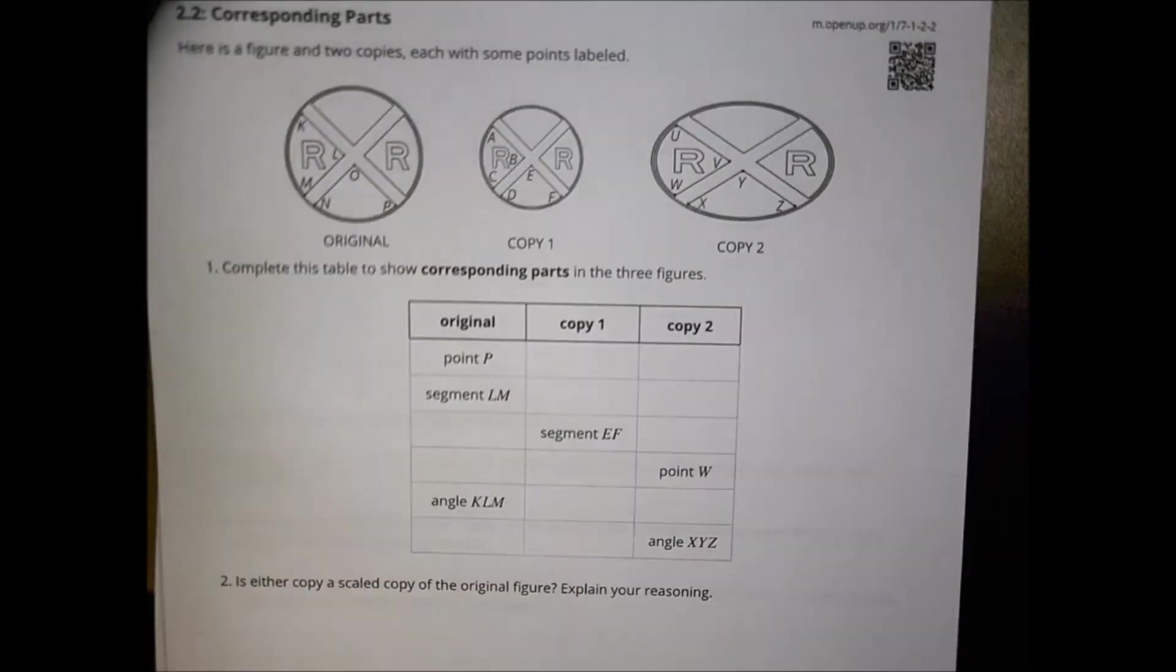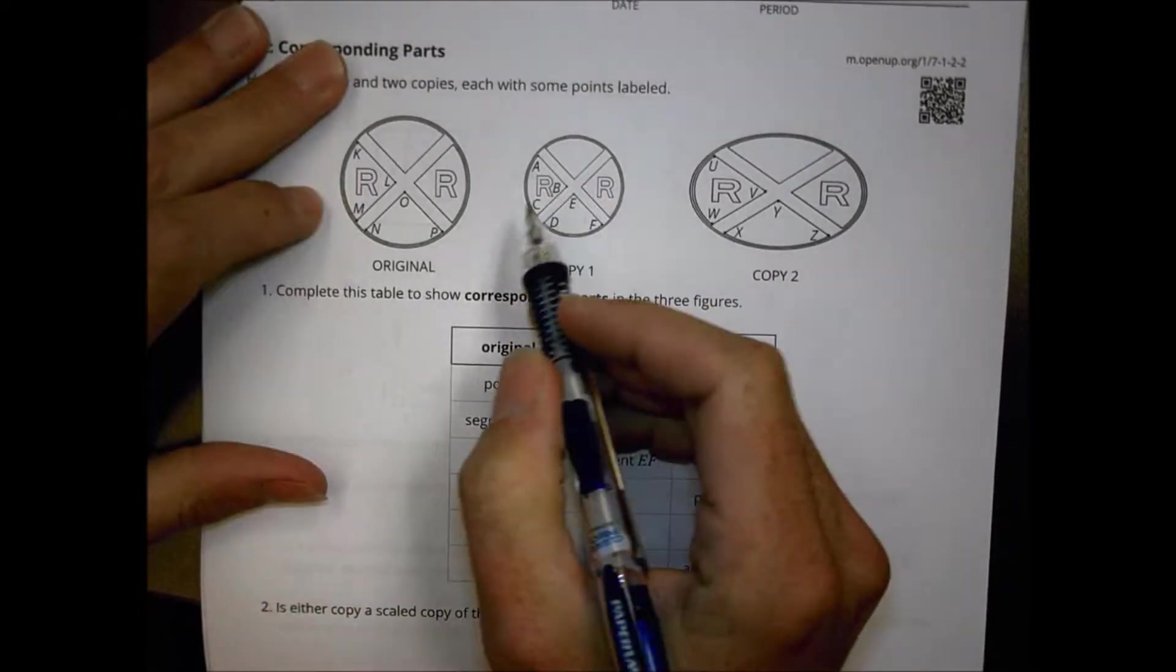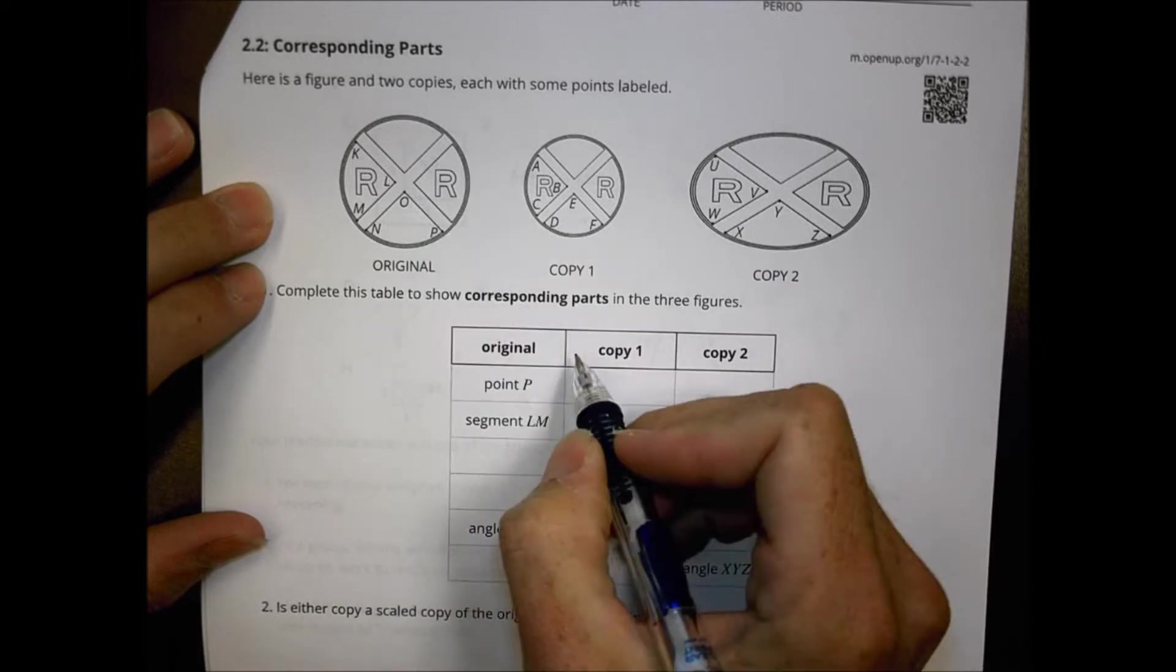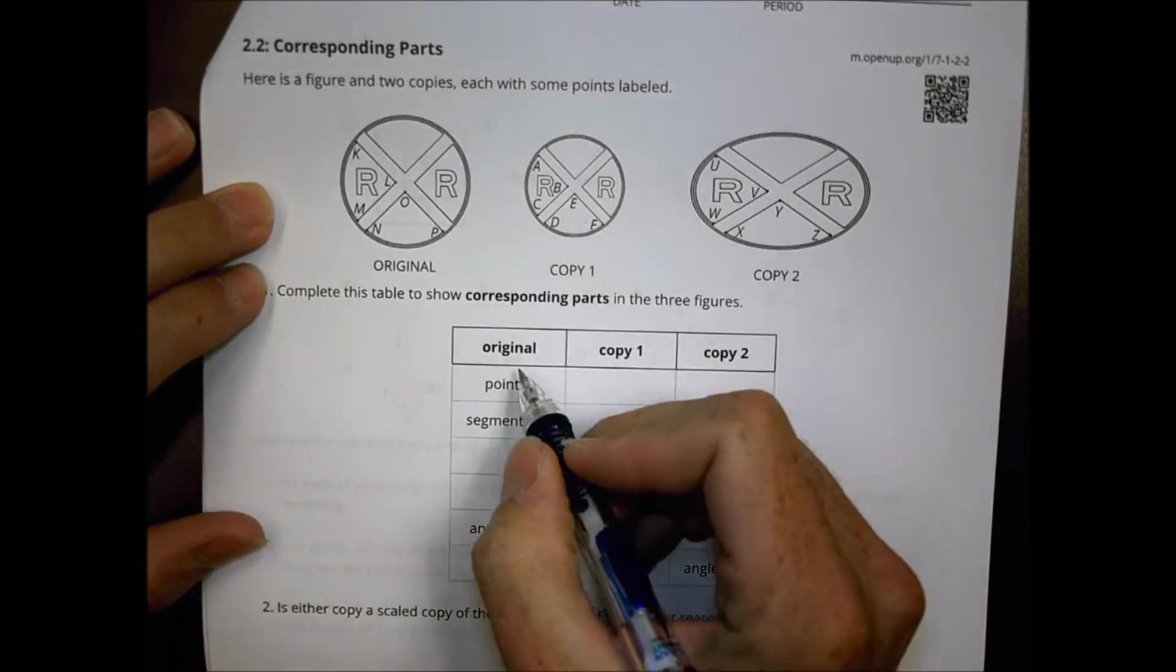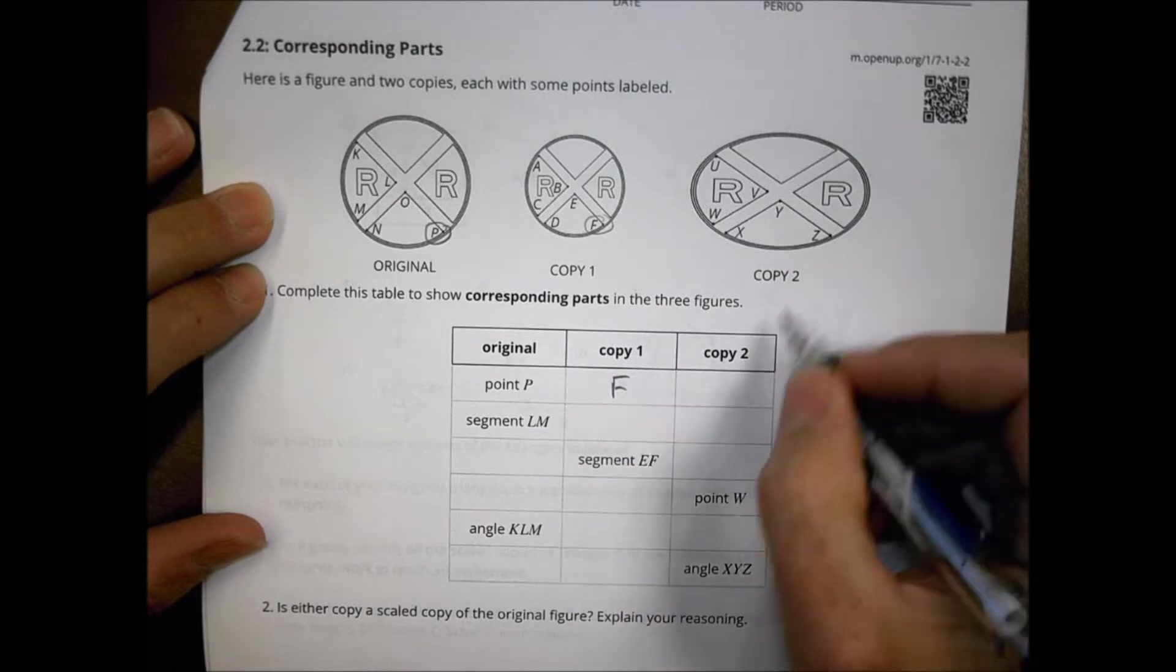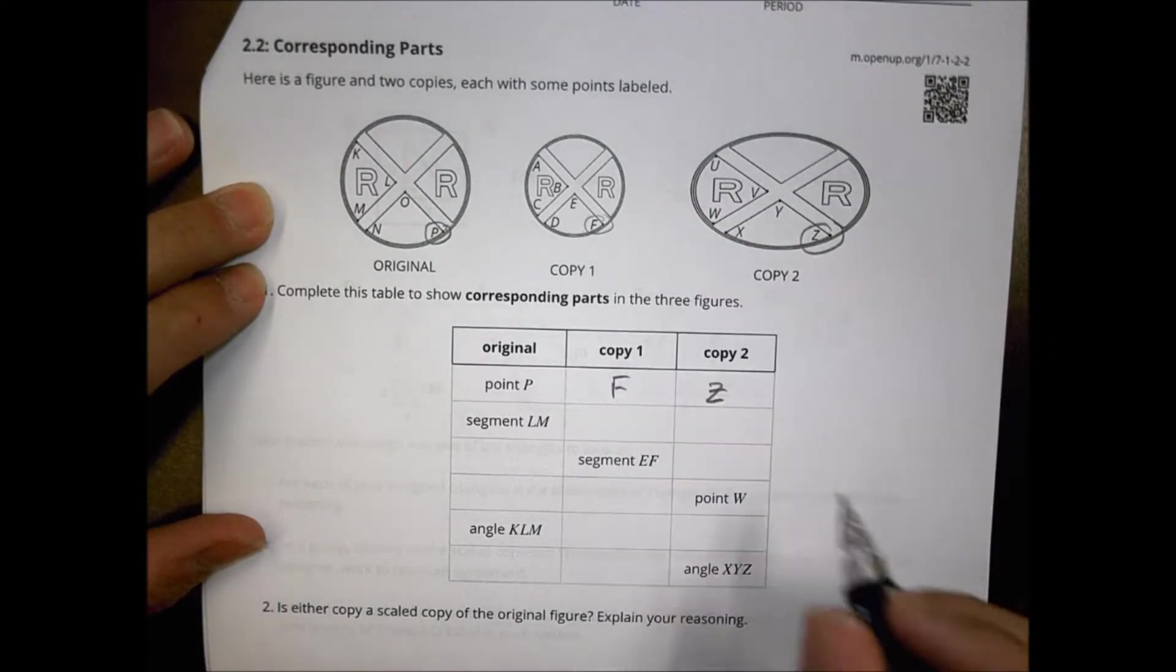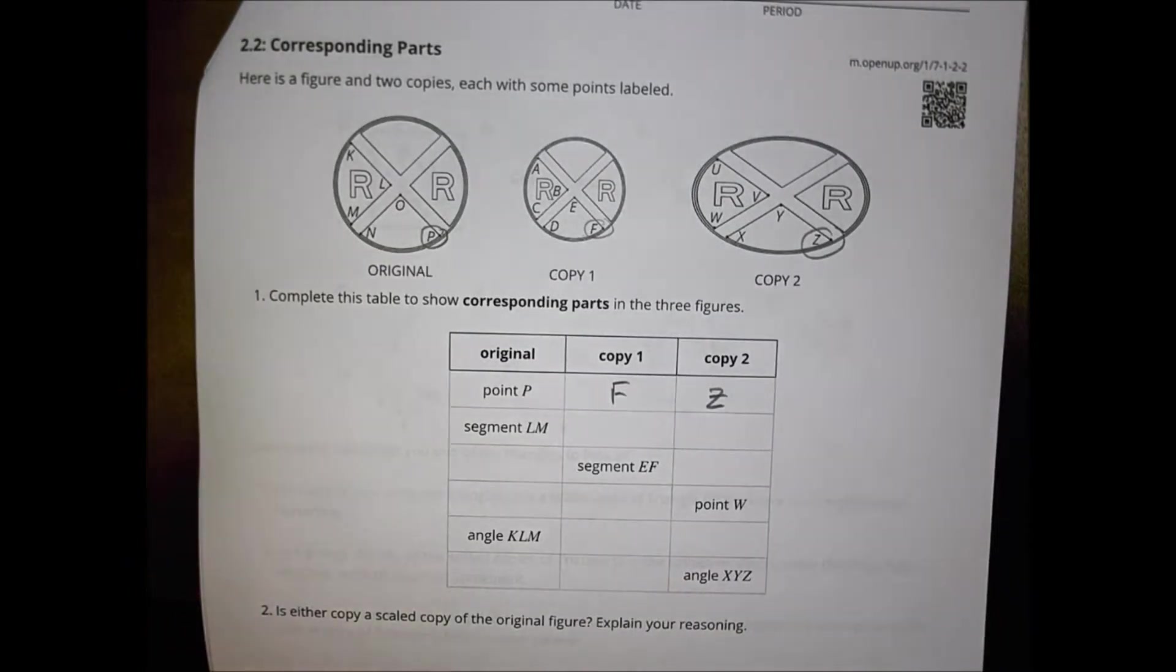From there, you moved into a section on corresponding parts. And you began with these three shapes - two of which certainly look like a circle and one is more of an oval shape. And you began to identify the corresponding parts from one circle to the next. So for example, you said this was point P on the original. And on copy number one, that same point you called point F, and copy number two was point Z. And you went through and worked out what all these little boxes were going to be filled in with in terms of the corresponding parts.